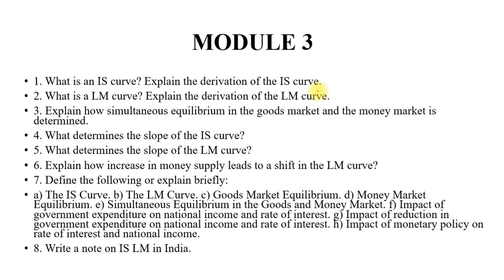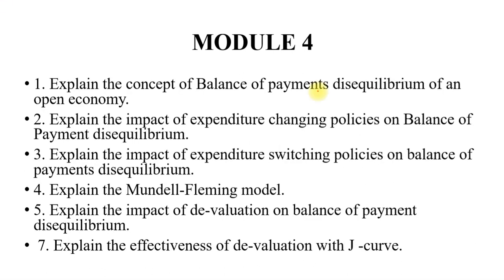That was Module 3. Last, under Module 4: Explain the concept of balance of payment disequilibrium of an open economy. Explain the impact of expenditure-changing policies on balance of payment disequilibrium. Explain the impact of expenditure-switching policies on balance of payment disequilibrium. Explain the Mundell-Fleming model — a very important topic. Explain the impact of devaluation on balance of payment disequilibrium. And lastly, explain the effectiveness of devaluation with the J-curve — again a very important topic that has been repeated many times in the paper.